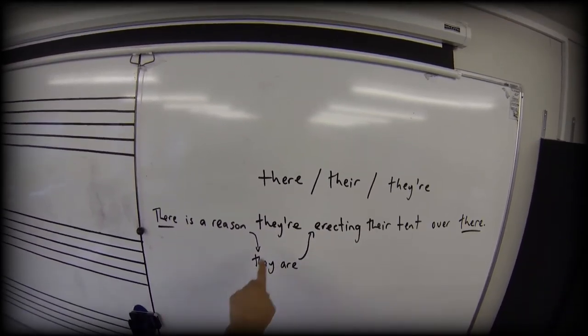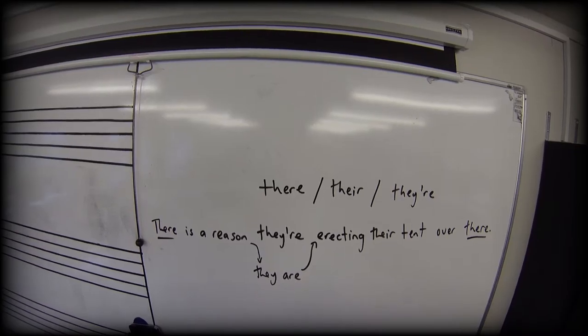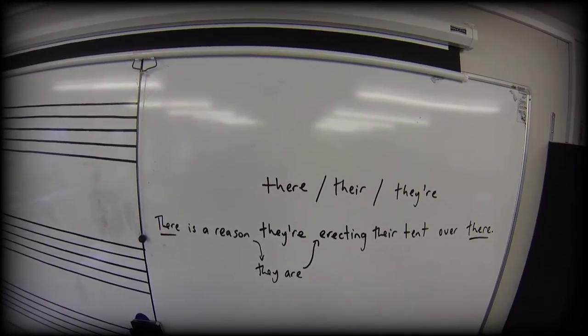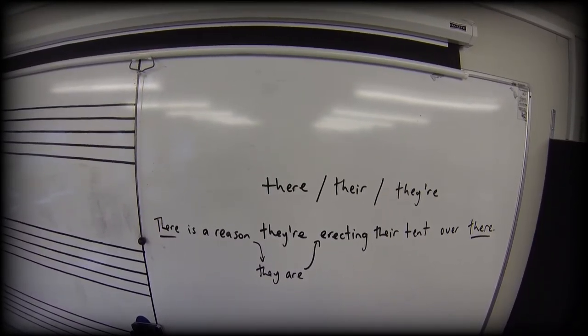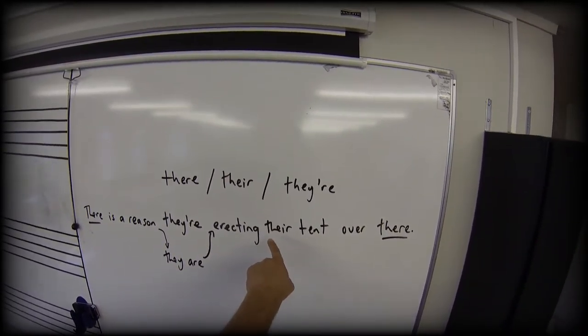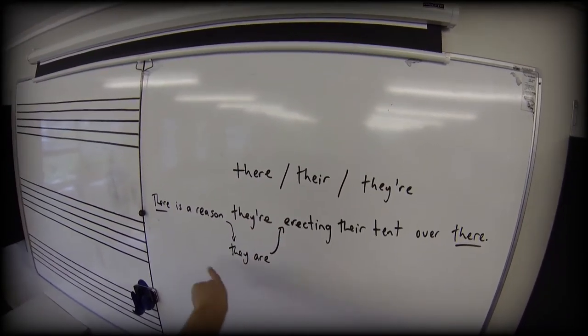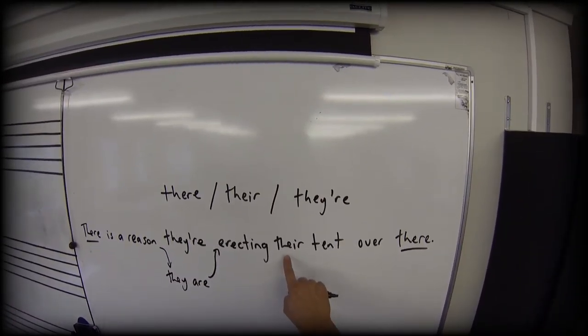So in formal writing this may not come up so much, but it will come up in informal writing a lot. And so we need to be clear about when we use the apostrophe form of there. The last one is what's called a possessive. Who owns the tent? Well this group of people own the tent. So it is their tent.